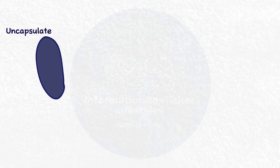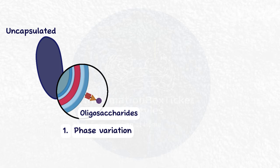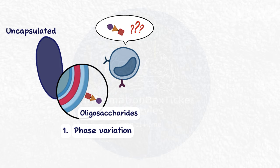Unencapsulated strains have two additional abilities that enable them to avoid the immune system. First, these strains may modify the oligosaccharides on their outer membrane each time they infect a cell, a process known as phase variation. Because of phase variation, the immune system is unable to recall the infecting strain, preventing it from mounting a rapid specific immune response when it encounters the strain again.